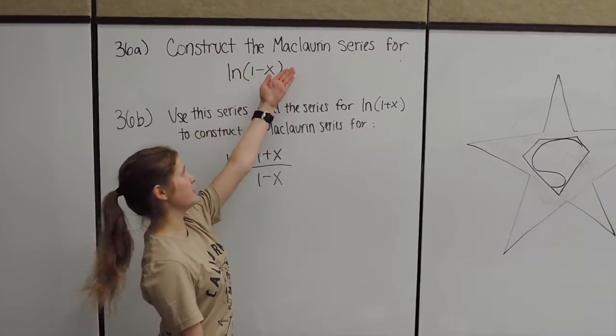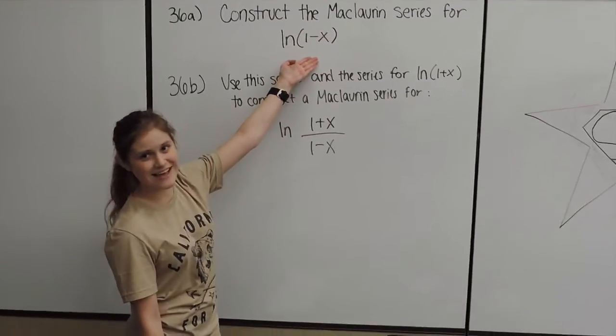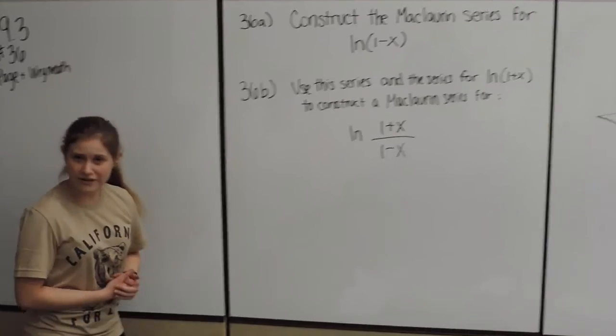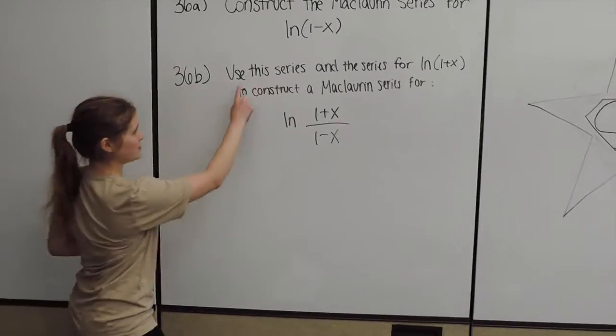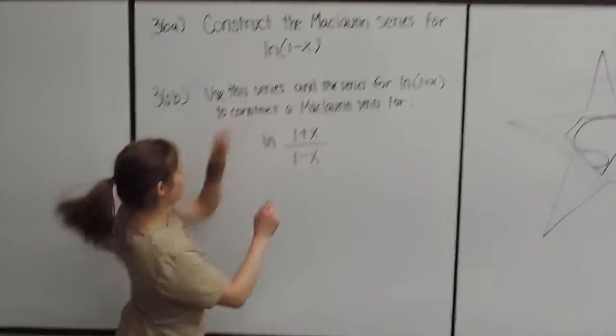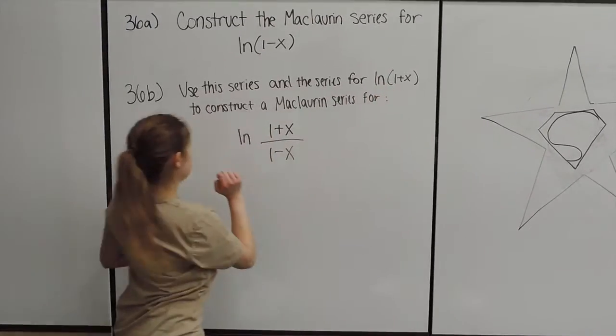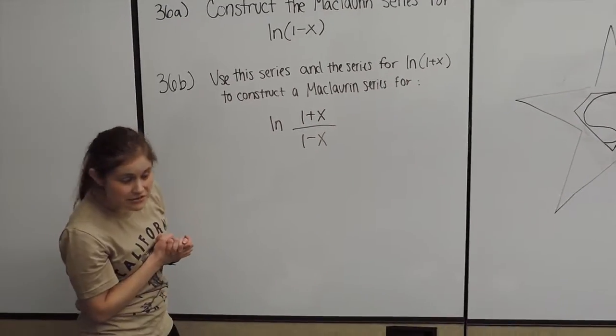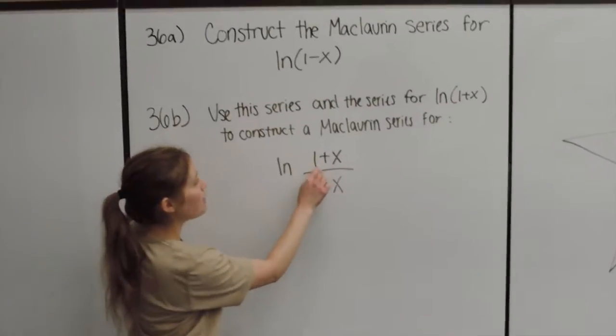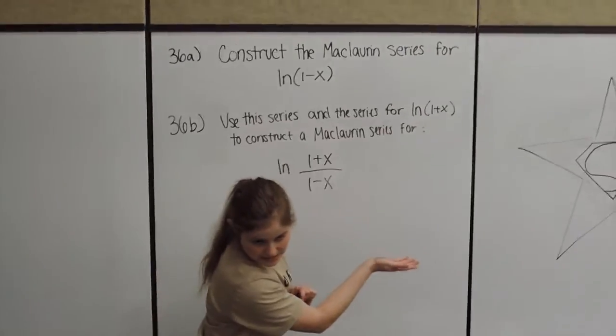Construct the McLaurin series for ln of 1 minus x. And then for 36B, we are going to use the series, that one and the series from ln of 1 plus x, to construct a McLaurin series for ln of 1 plus x over 1 minus x.